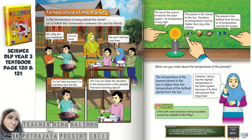Now let's look at the hot question: if the Earth were located in Uranus's position, would it be suitable for life? Why? This is Uranus right here. So if Earth, instead of being the third planet from the sun, were right here — do you think it would still be suitable for life? What do you think the temperature is here? You're right — it's really, really cold because of its position; it's too far away from the sun.